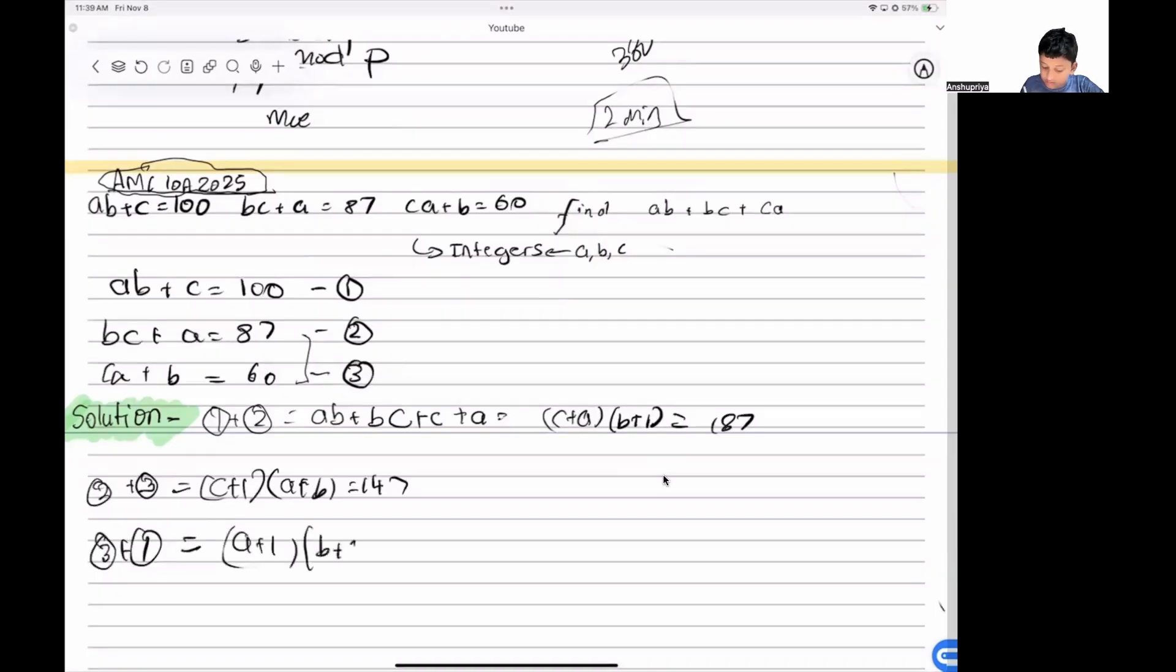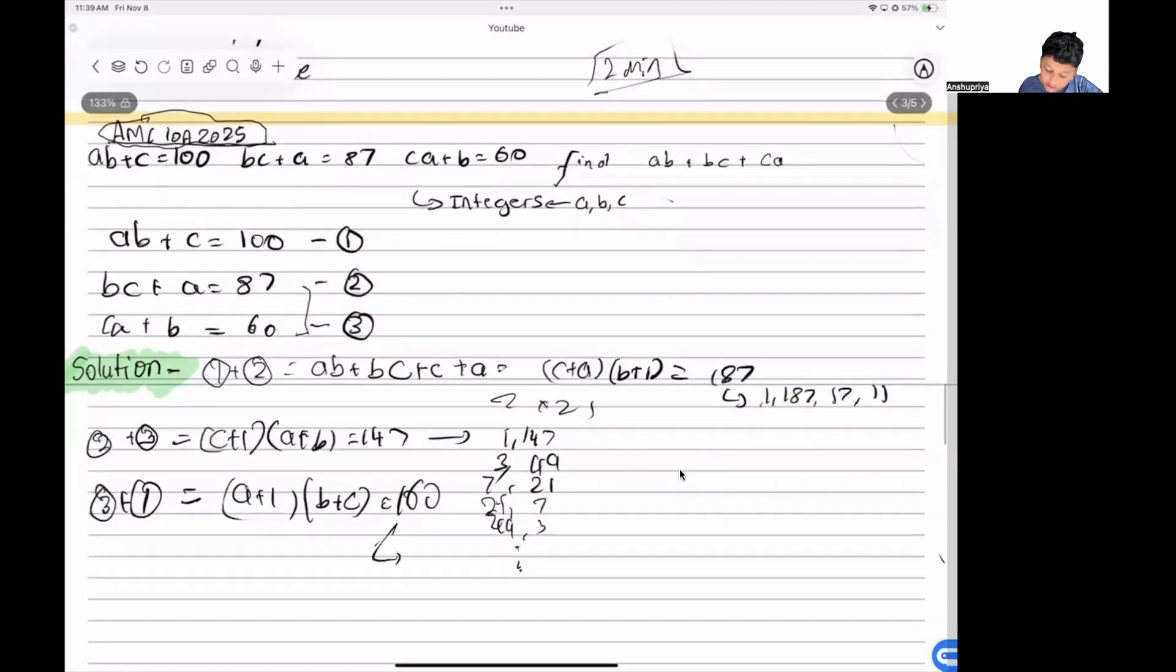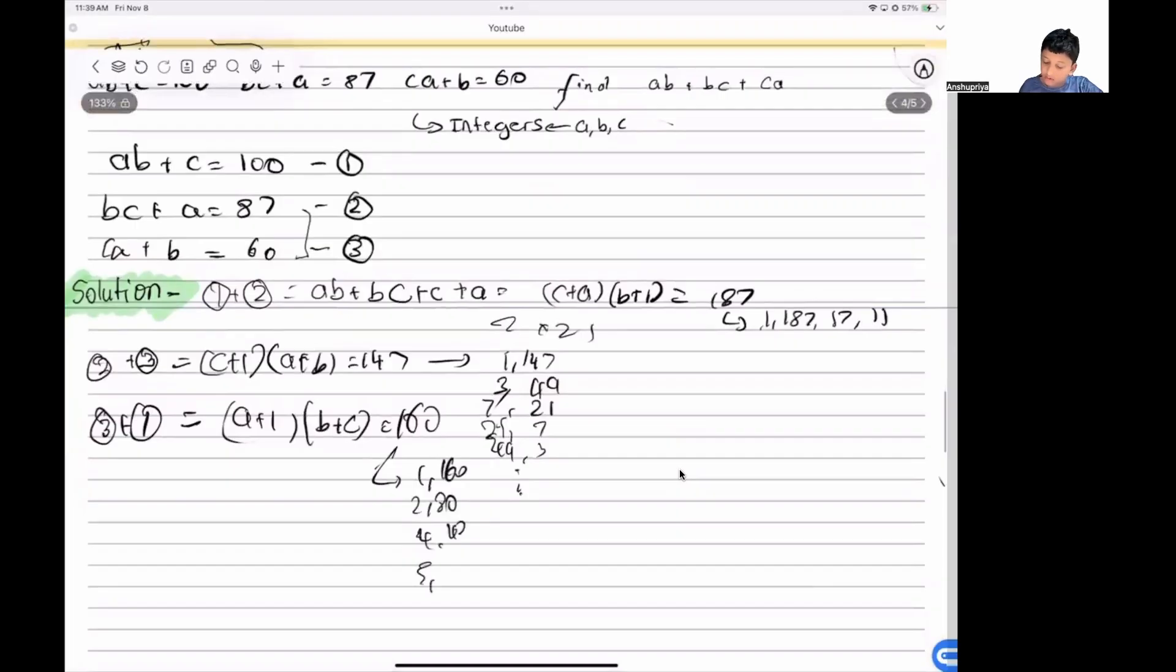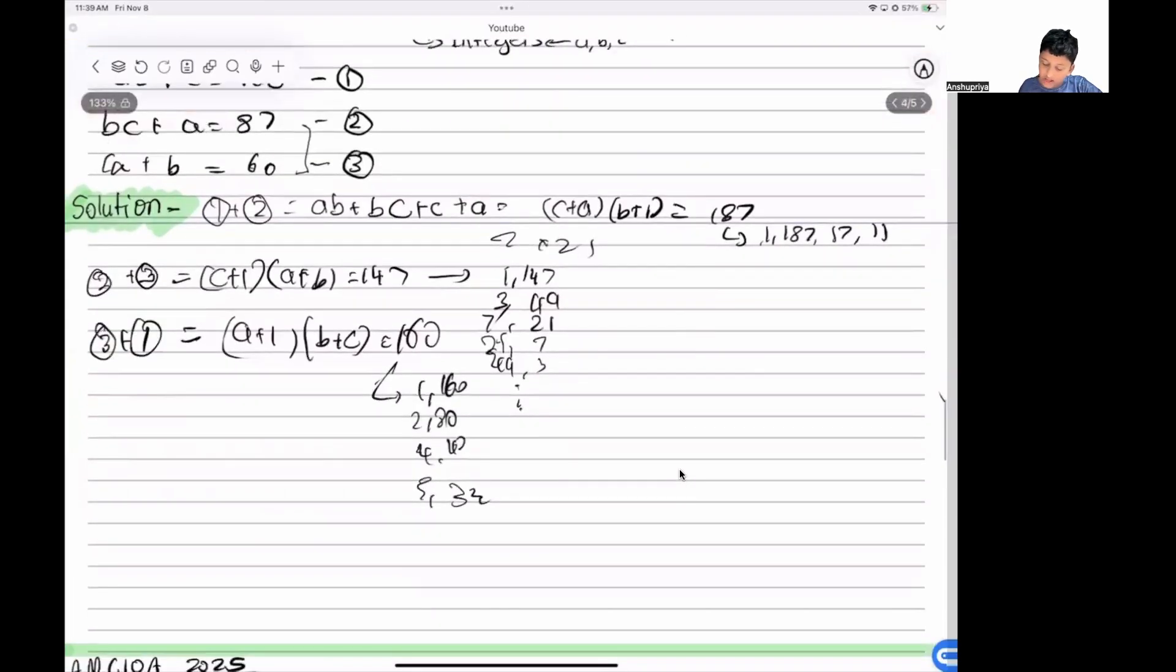We can factor these. We will get 187 = 11 × 17, 147 = 3 × 49 = 7 × 21, and 160 is 1 × 160, 2 × 80, 4 × 40, 5 × 32, and 8 × 20.